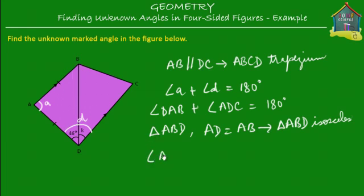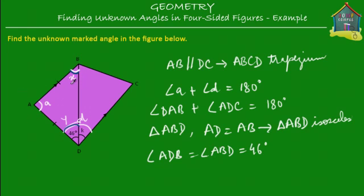So if we take triangle ABD, then in that triangle AD is equal to AB, therefore triangle ABD is an isosceles triangle. In an isosceles triangle the angles opposite the equal sides are equal. So angle ADB — this little angle which is 46 degrees — is equal to angle ABD. Let's call this x and this y: x equals y, and since y equals 46 degrees, x equals 46 degrees too. So ADB equals ABD equals 46 degrees.